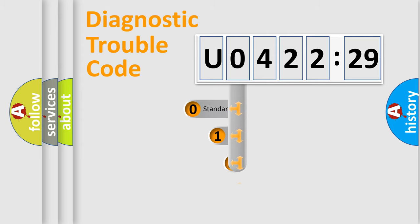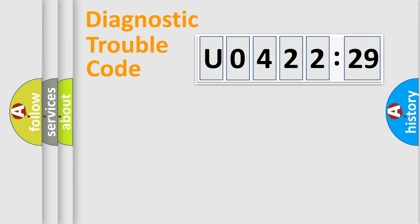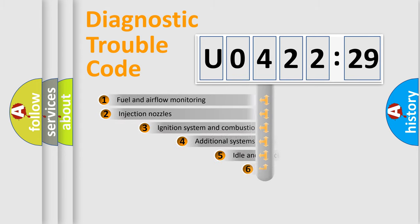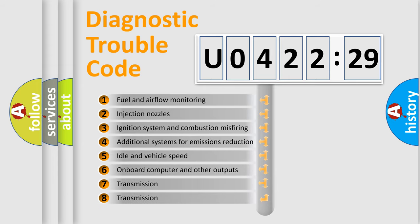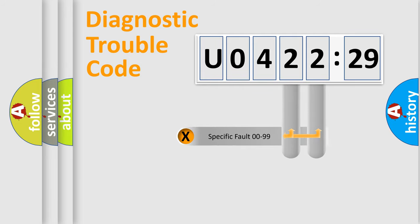This distribution is defined in the first character code. If the second character is expressed as zero, it is a standardized error. In the case of numbers 1, 2, 3, it is a manufacturer-specific error. The third character specifies a subset of errors. The distribution shown is valid only for the standardized DTC code. Only the last two characters define the specific fault of the group.